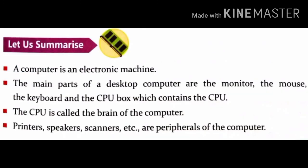Let us summarize. A computer is an electronic machine. The main parts of a desktop computer are the monitor, the mouse, the keyboard, and the CPU box. The CPU is called the brain of the computer. Printers, speakers, scanners, and similar devices are called peripherals of the computer.